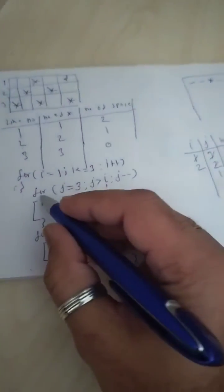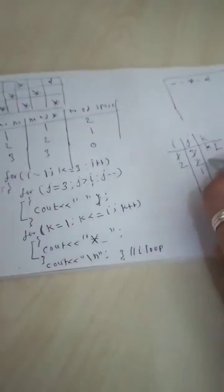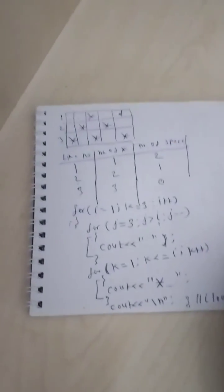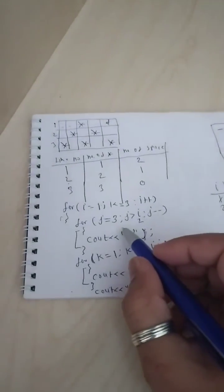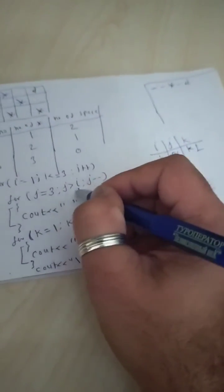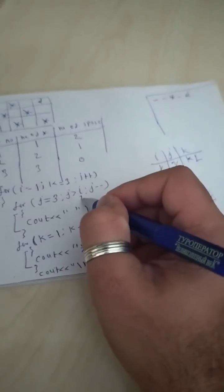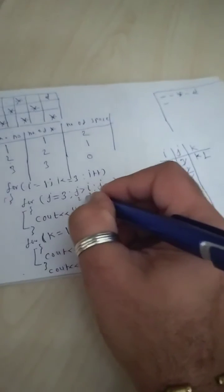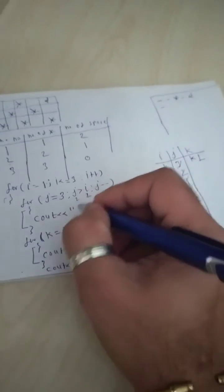The i loop updates: i becomes two. We restart the J loop — J becomes three. The value of i is now two. Three is greater than two — condition true — one space is printed. Next, J becomes two: two is greater than two? No — condition false, so this loop ends. Only one space was printed for line two.